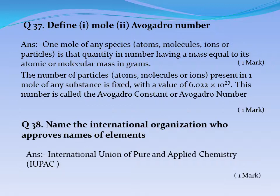Question No. 37: Define mole and Avogadro's number. Answer — One mole: One mole of any species (atoms, molecules, ions or particles) is that quantity in number having a mass equal to its atomic or molecular mass in grams. Answer — Avogadro's number: The number of particles (atoms, molecules or ions) present in one mole of any substance is fixed with the value of 6.022×10²³. This number is called the Avogadro constant or Avogadro number.